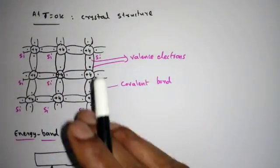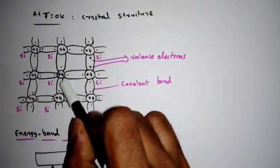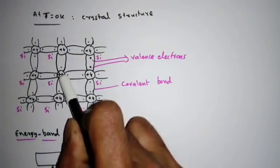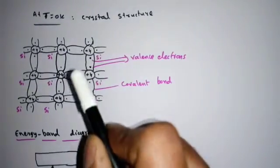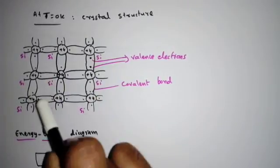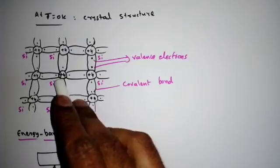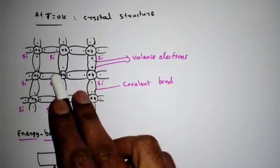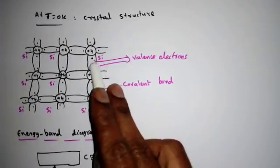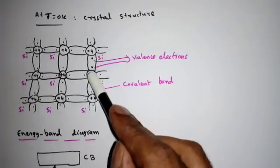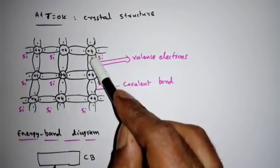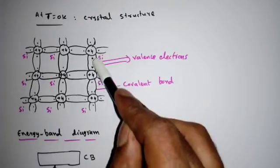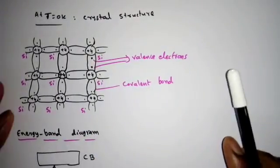Let's look at the crystal structure of silicon — an intrinsic semiconductor — at T = 0 Kelvin. Every silicon atom is surrounded by four silicon atoms. The '+4' indicates four valence electrons; there is positive charge in the nucleus to balance these. The four surrounding electrons are the valence electrons. Whenever a silicon atom neighbors another silicon atom with one electron sharing per bond, and two electrons are shared in that bond, it is called a covalent bond.